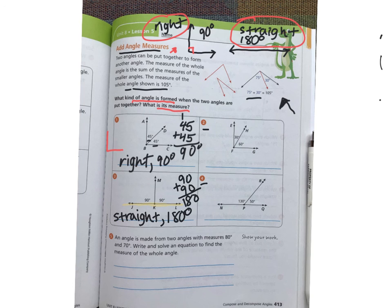Then on number five, it's the same thing, but they're not giving you a picture. It says an angle is made from two angles, which measure 80 degrees and 70 degrees. So I need to put those together to find out the measure of the whole angle. So I'm going to take my 80 degrees plus my 70 degrees to figure out the total. Always remember that you're going to have your little degrees there. You can handle that one. And when you are done, meet me on page 414.